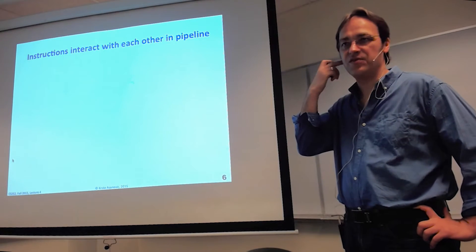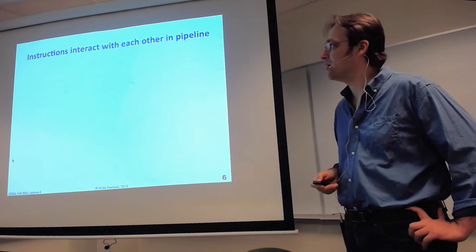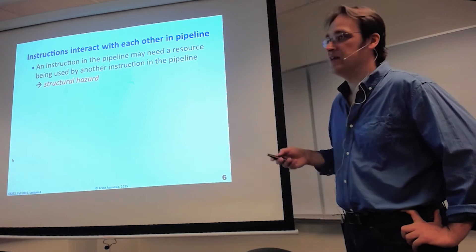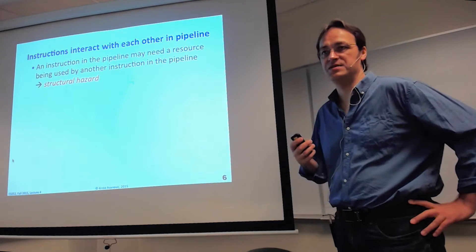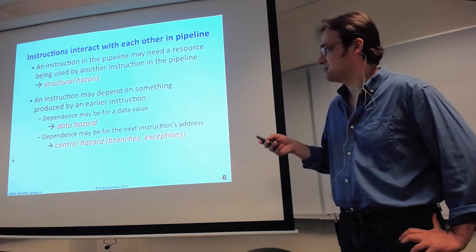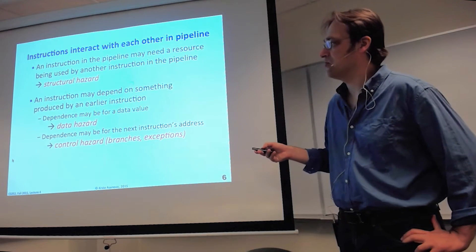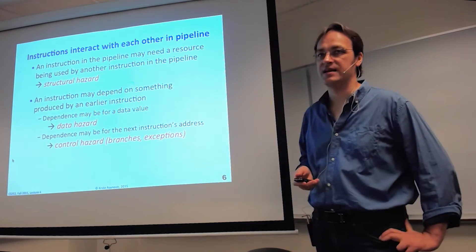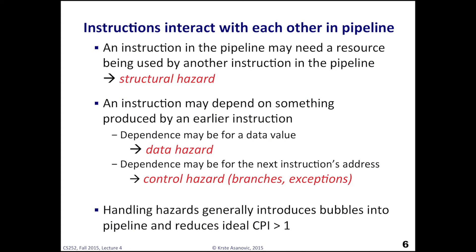Pipelining would be easy if instructions didn't interact with each other in the pipeline. These interactions are called hazards. If an instruction needs a resource being used by another instruction — some functional unit — that's a structural hazard. If an instruction depends on a data value produced by an earlier instruction, that's a data hazard. If the dependence is on information telling you which address to fetch from next — branches and exceptions — that's a control hazard. Techniques to handle hazards generally add bubbles in the pipeline, which is why CPI increases beyond one.